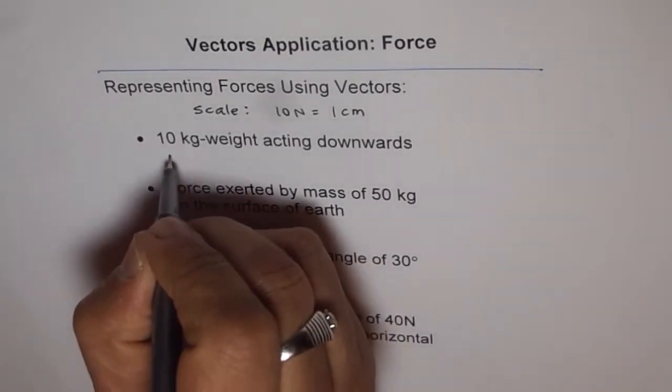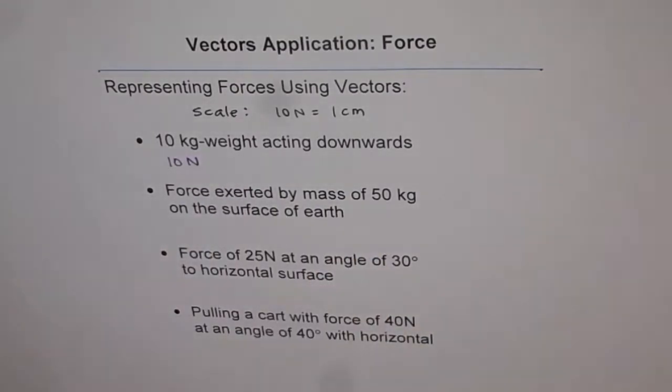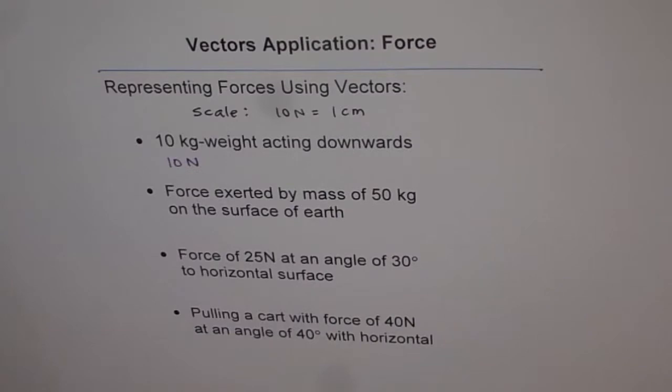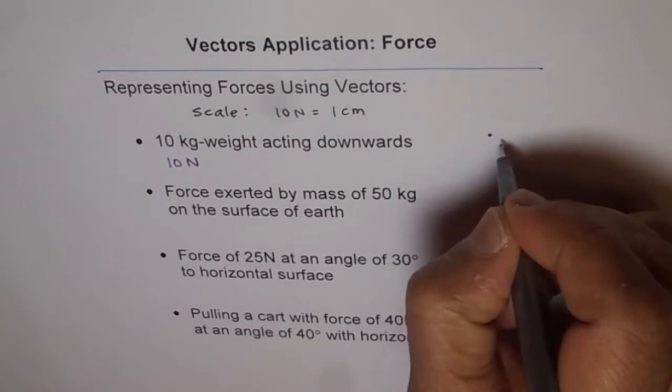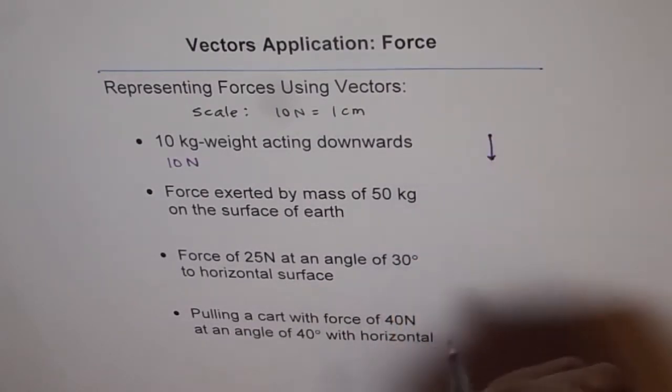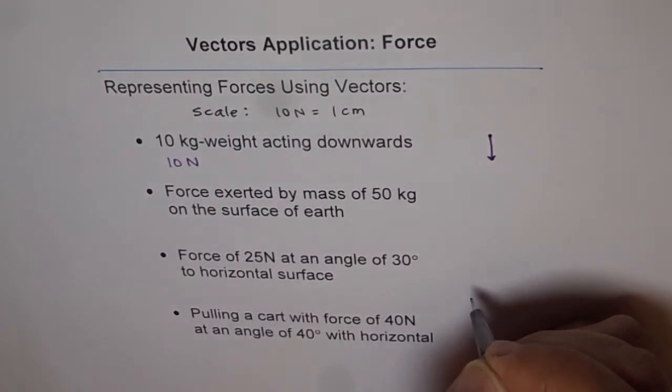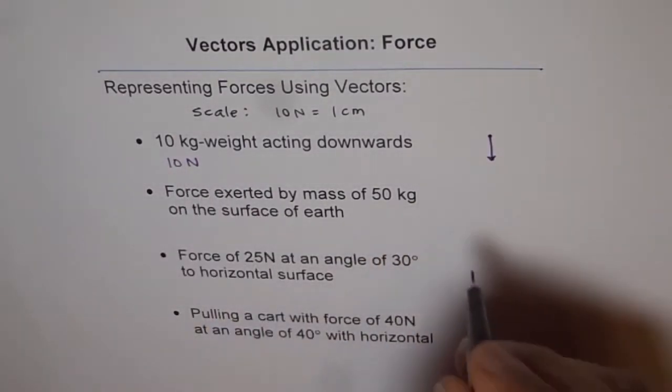So actually speaking, 10 kg weight is same as 10 Newton. It is a force. Weight is a force of attraction of a body towards the center of the earth, and it acts downwards. Therefore, this could be represented by an arrow of 1 centimeter going downwards. So that represents 10 Newtons downwards.